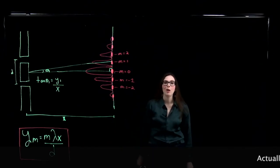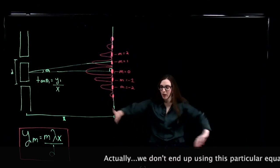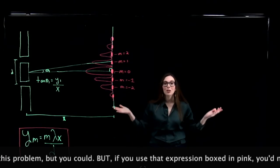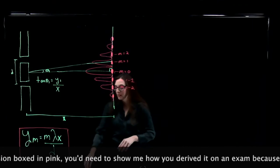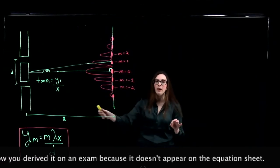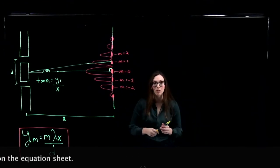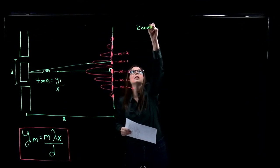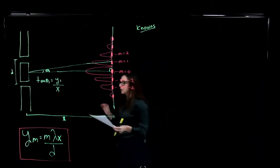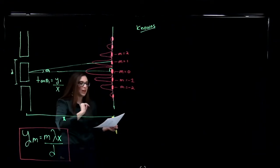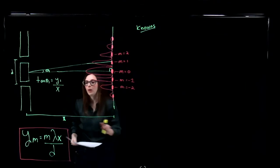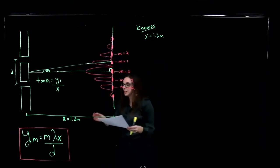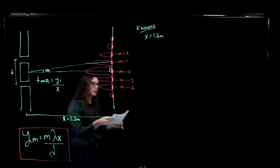We'll use this equation to solve a problem. When working through problems, best practices include always writing down knowns and unknowns, drawing a diagram, and figuring out which equations to use. Reading the problem: we have a screen separated from a double slit source by 1.2 meters, so x equals 1.2 meters. The distance between my two slits, d, is 0.03 millimeters.